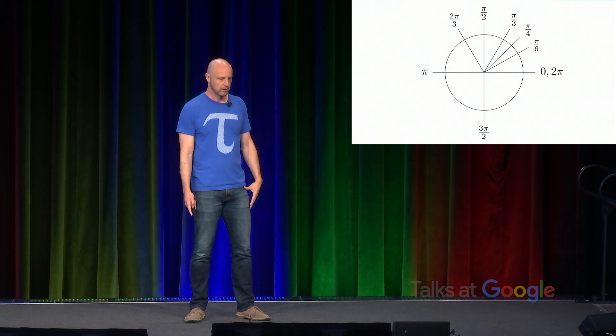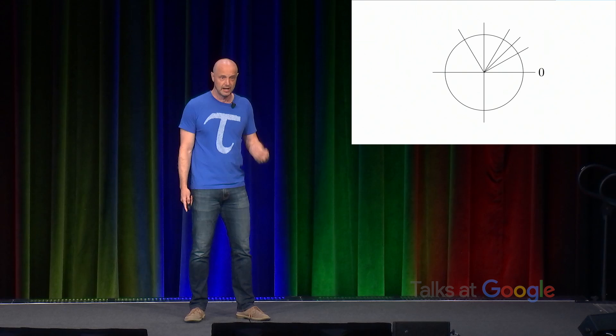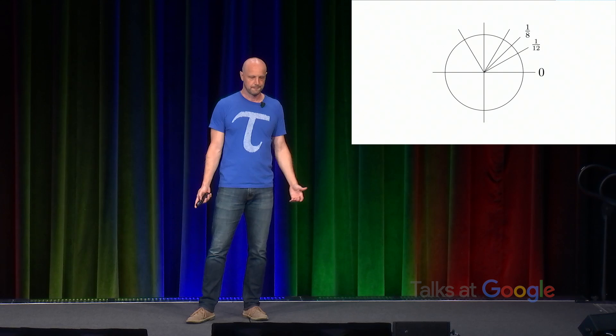So for example, the 30 degree angle here is a 12th of the circle. 45 degrees is an eighth. Right angle is just a quarter. There's a third. And finally, all the way around the full circle.